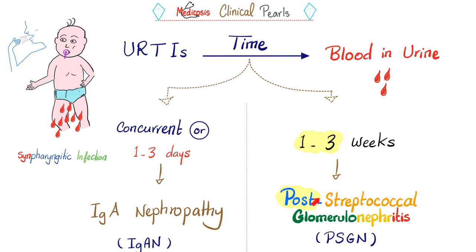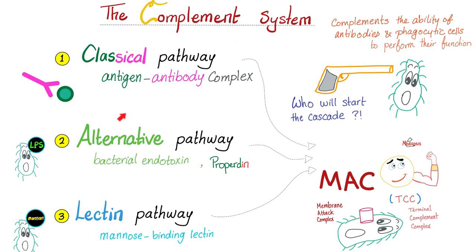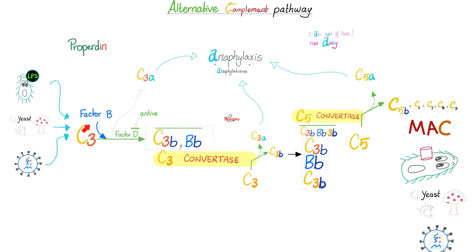But if it's 1 to 3 weeks later, that's post-streptococcal glomerulonephritis. The way to remember it is to look at the word 'post,' which means delayed — so that's weeks. The alternative complement pathway is activated and involved in cases of IgA nephropathy, very similar to post-streptococcal glomerulonephritis. Here is your alternative complement pathway — pause and review.